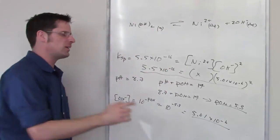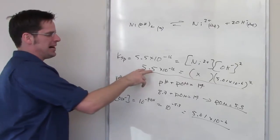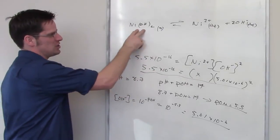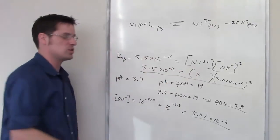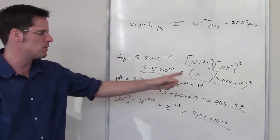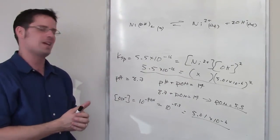Any amount of nickel 2+ that's above that number will be too high, and you'll cause precipitation to nickel hydroxide. So solve for x and just say any number above that number x is going to cause precipitation at this pH.